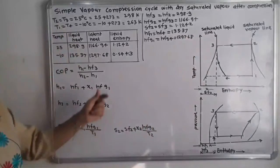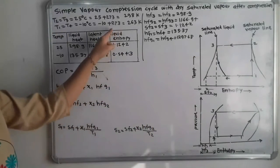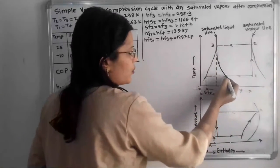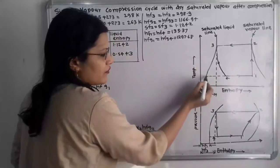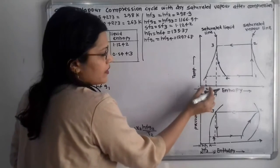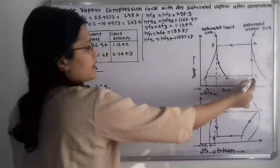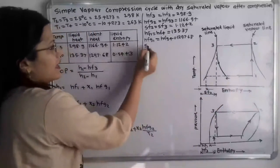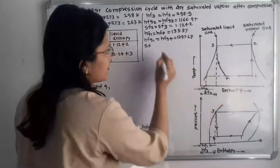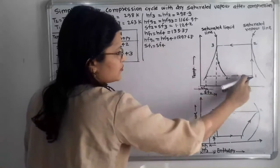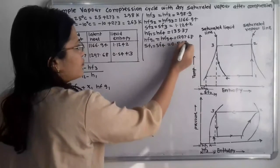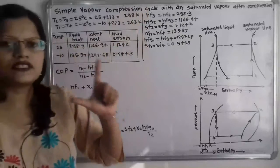For the liquid entropy at minus 10 degrees Celsius, points 1 and 4 are extended to the saturated liquid line, intersecting at the same point. Using suffix F for entropy: SF1 equals SF4 equals 0.5443 kJ/kg·K. This completes all the required data from the property table.